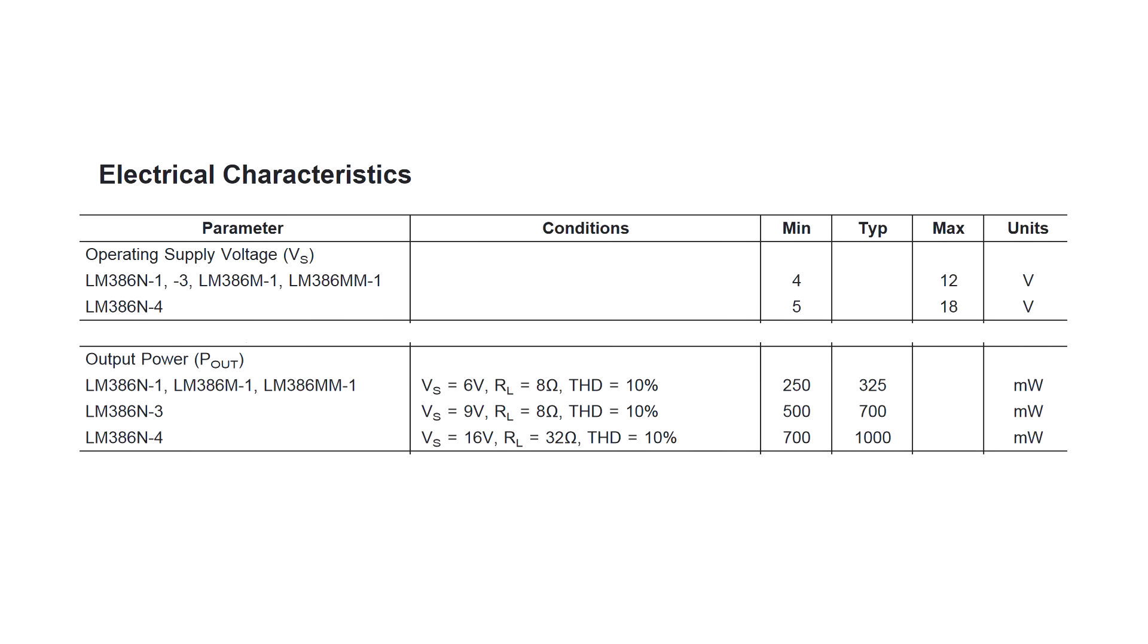I want you to be aware that there are a couple of versions of the LM386 out there that have different input voltage and output power ratings. For example, the LM386N-1 works from 4 to 12 volts, and the dash 4 works from 5 to 18 volts.